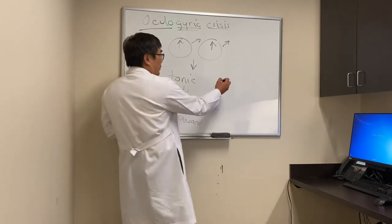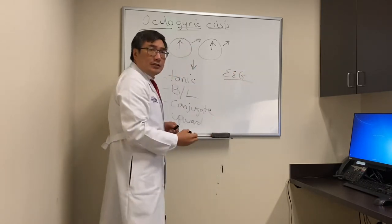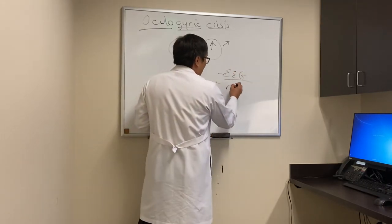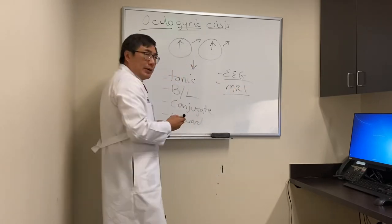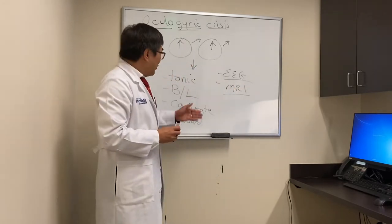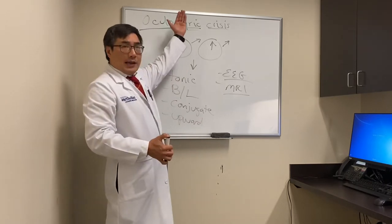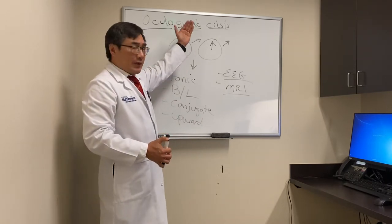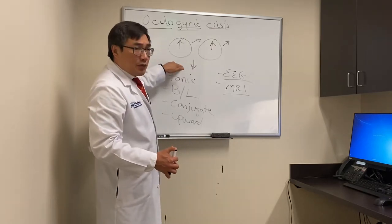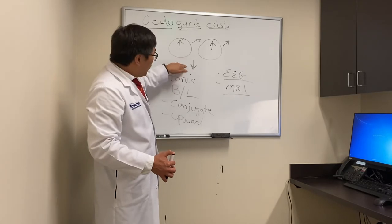In addition, you need to work it up because there are other things that can cause it. Normally we would do an EEG to look for seizure activity, and rarely intracranial lesions are associated with it. An MRI scan, especially looking at the thalamo-mesencephalic junction — for the tonic upgaze version we look at the vertical gaze center — and the downgaze form could be caused by hydrocephalus or hemorrhages at the level of the thalamo-mesencephalic junction.